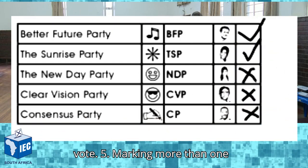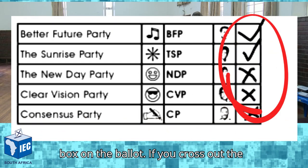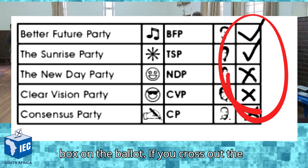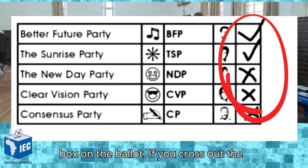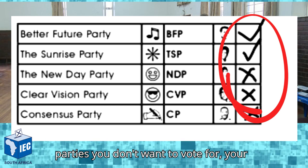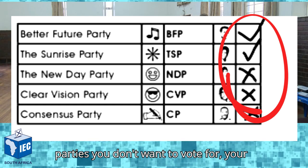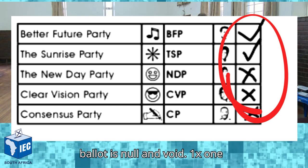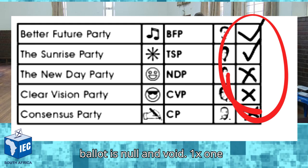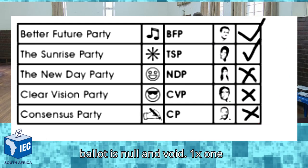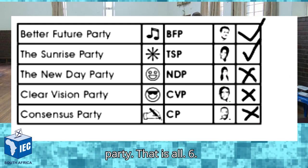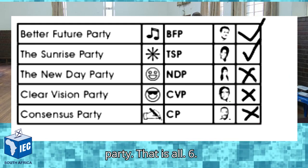5. Marking more than one box on the ballot. If you cross out the parties you don't want to vote for, your ballot is null and void. One cross, one party — that is all.